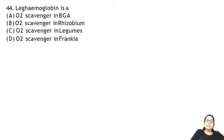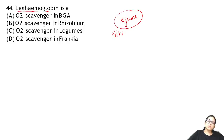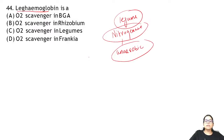Question 44: leg haemoglobin is a pinkish pigment found in legume plants. During nitrogen fixation in legumes, the enzyme nitrogenase works and requires anaerobic conditions — it does not need oxygen. To maintain anaerobic conditions, oxygen must be scavenged, and leg haemoglobin helps in this oxygen scavenging.